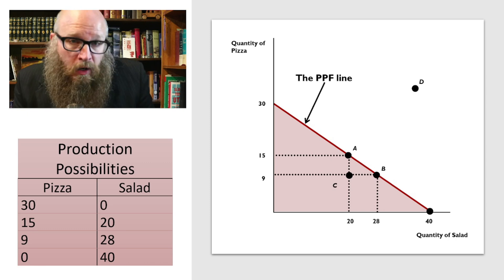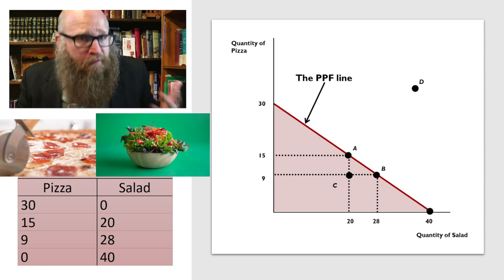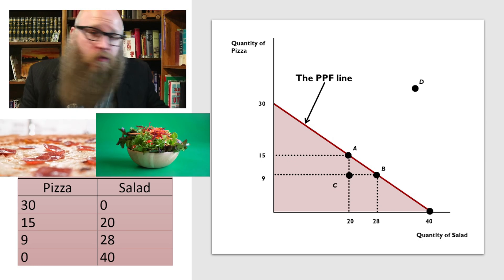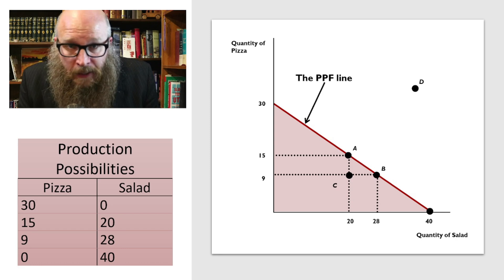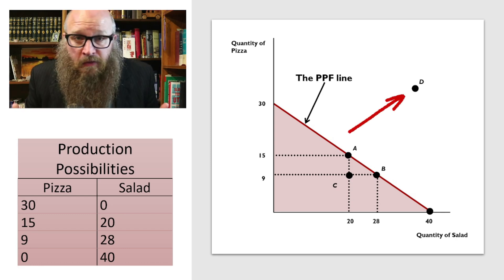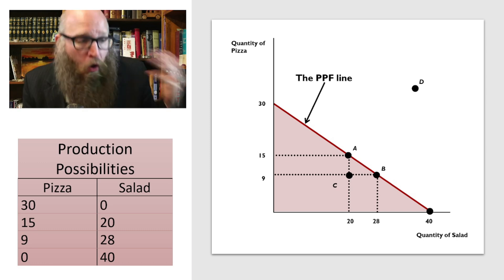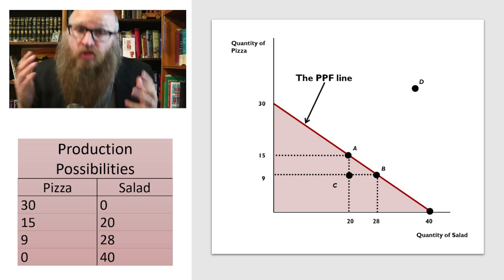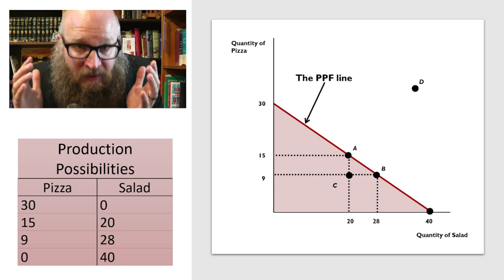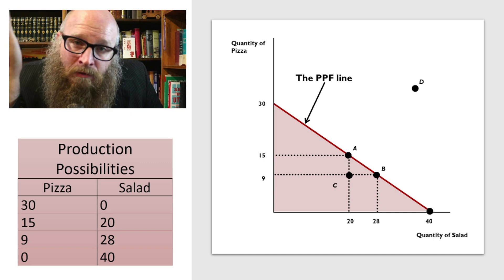The dot A is one particular combination, 15 pizzas and 20 salads. And B is a different combination, 9 pizzas and 28 salads. The dots C and D are interesting. For dot D, that's not possible. We can't reach that level of production. You can't have over 30 pizzas and almost 40 salads at the same time. We just don't have enough productive capacity to build that.